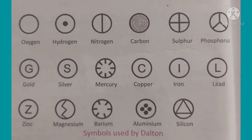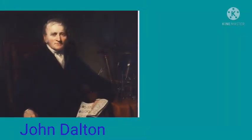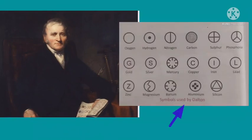Earlier, pictorial symbols were used for representing elements. Later, John Dalton, an English chemist, improvised these symbols and proposed a scheme of notation to represent elements.